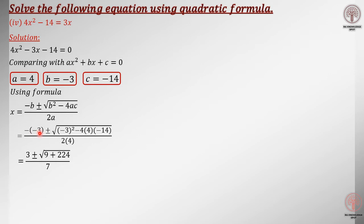Moving towards the next step: minus minus gives plus 3, plus or minus — minus 3 squared equals 9. Students, not 3 times 2 are 6, but 3 times 3 is 9. And there is an even power, that is why the minus vanishes. Now minus minus gives plus, and 4 times 4 is 16 and 16 times 14 is 224.